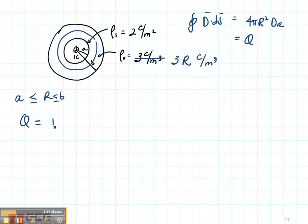Q is going to still include my 1 Coulomb, and it's still going to include my ρ_s times 4πA², which is what I calculated on the previous page. And now I need to include the part of the volume that I have picked up here with my Gaussian surface. So that part is going to be a volume integral of ρ_v dV.